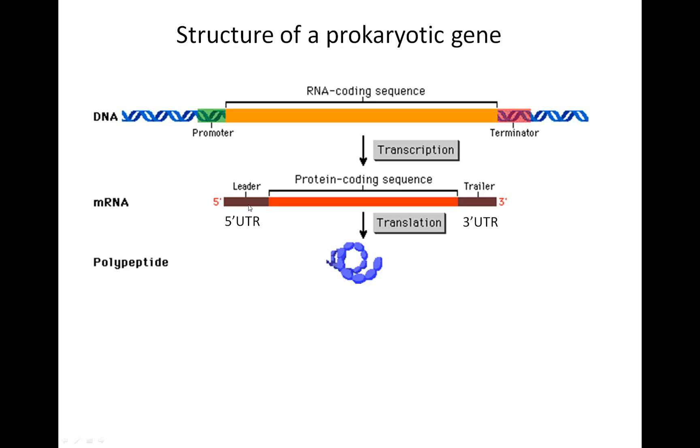This little intervening region is called the five prime untranslated region, sometimes also called the leader sequence. Likewise, at the end, the protein coding region will end with the stop codon, and then there's a little trailer sequence, or the three prime untranslated region, which continues until the place where transcription ended.